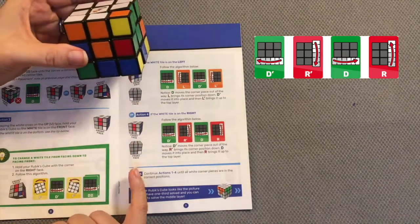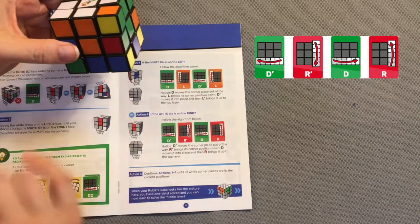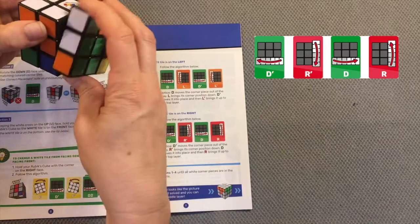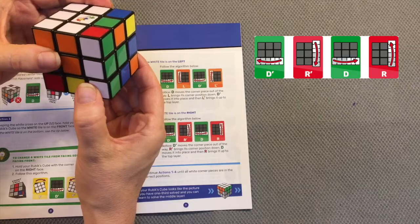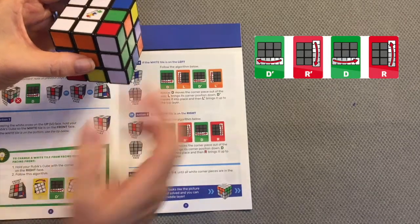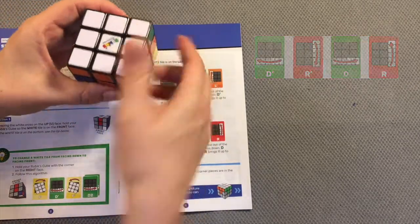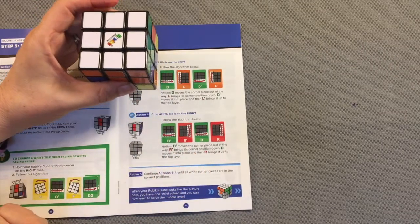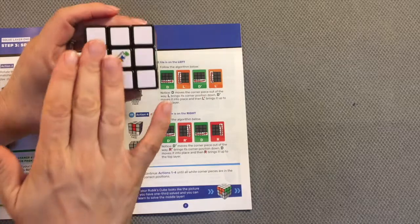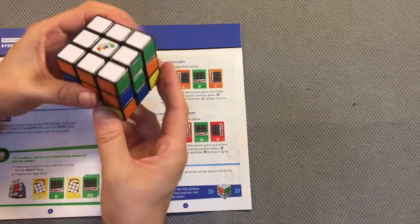Notice that this moves the corner piece out of the way, right towards me, brings the corner down. I've heard people talk about this being an elevator: down to the right brings it back in place, and right away from me brings everything back together to the top layer.